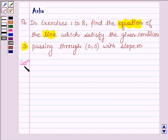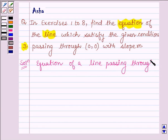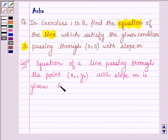So let's start with the solution. We know the equation of a line passing through the point x0, y0 with slope m is given by y minus y0 is equal to m times of x minus x0.